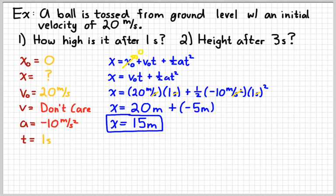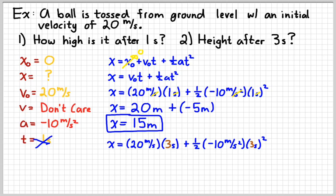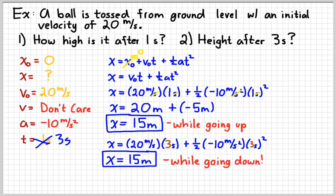Now suppose, just because I'm a crazy physics teacher, we wanted to know what the height was after three seconds. Well, we'd do the same thing. The only thing that changes is the time. So instead of this being one second, we'd make it three seconds now. And crazily enough, we'd get the same answer, 15 meters. And the thing that we have to realize is that the first answer gave us the position while it was going up. And the second answer, three seconds, gave us the position while it was coming back down. So it's at every position twice. It's a parabola. It's symmetrical. So it's just something important to realize there as well.